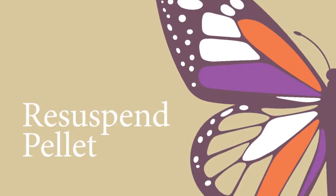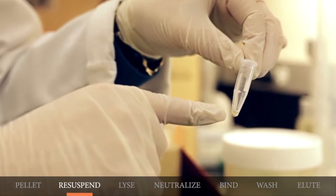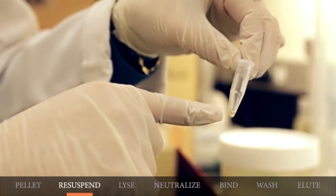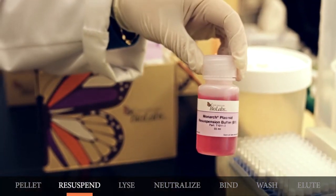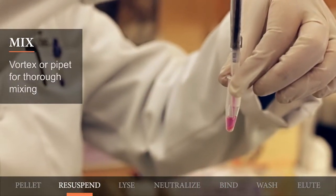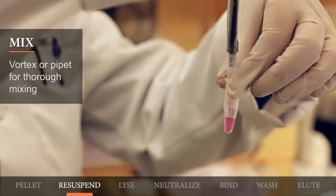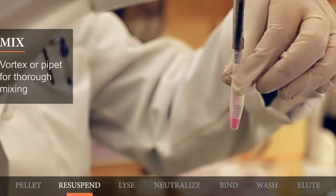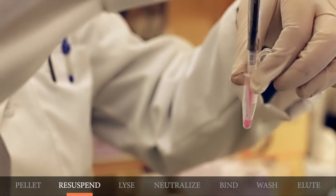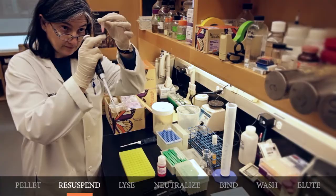The next step will be the resuspension step. Resuspend the bacterial pellet in 200 microliters of the plasmid resuspension buffer B1. You can vortex the tube or pipette up and down to ensure that the cells are completely resuspended. It is important to resuspend the cells completely in order to achieve complete lysis in the following step.